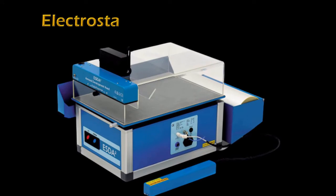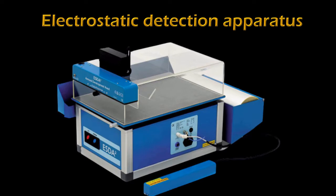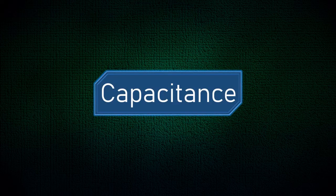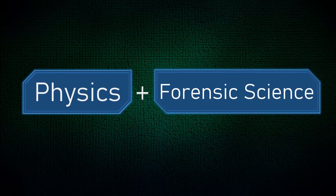This is called electrostatic detection apparatus. With the help of this device, we can actually figure out what was written on the destroyed paper by reading the impressions on the pages below it. And its working is based on the concept of capacitors. That's why today we are going to combine physics and forensic science to understand how this device works.